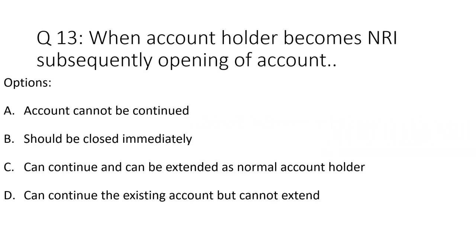Question 13: When an account holder becomes NRI subsequently after opening of account. Option A: account cannot be continued. Option B: should be closed immediately. Option C: can continue and can be extended as normal account holder. Option D: can continue the existing account but cannot extend. The correct answer is Option D — can continue the existing account till maturity but cannot be extended.